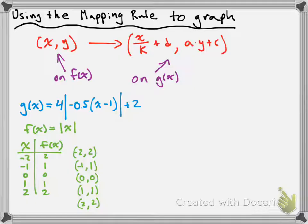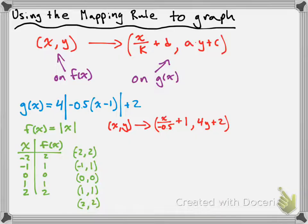In order to get points on my transformed function g(x), I need to know my mapping rule. The mapping rule is that the point x, y goes to the point x divided by negative 0.5 plus 1 — because negative 0.5 is my k value and 1 is my d value — and the y value becomes 4 times y plus 2, because my a value is 4 and my c value is 2. I'll apply the x and y values from each parent function point to the mapping rule to get new points on the transformed function.